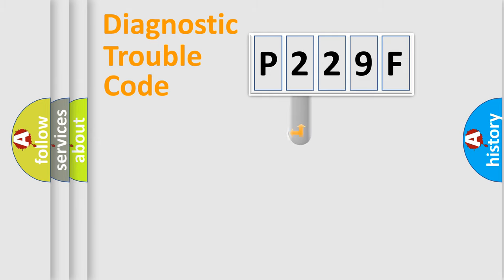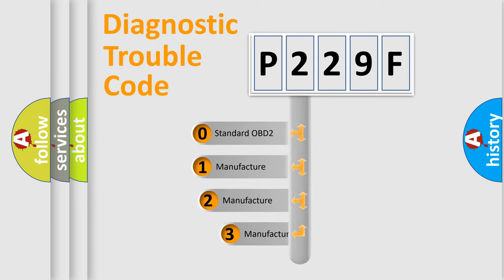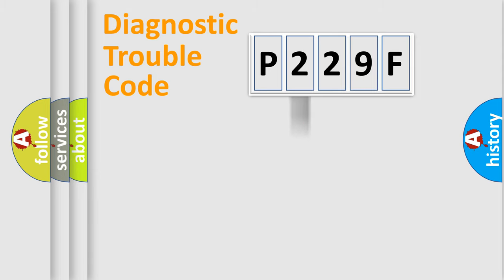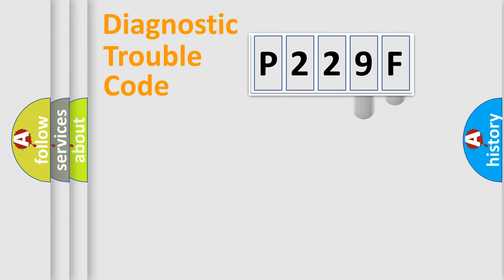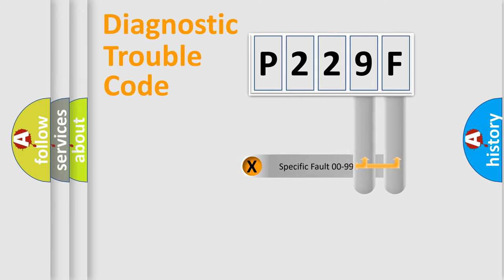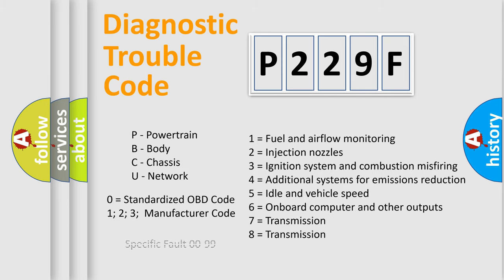This distribution is defined in the first character of the code. If the second character is expressed as zero, it is a standardized error. In the case of numbers 1, 2, or 3, it is a more manufacturer-specific expression of a car-specific error. The third character specifies a subset of errors. The distribution shown is valid only for the standardized DTC code, and only the last two characters define the specific fault of the group. Such a division is valid only when the second character is expressed by the number zero.